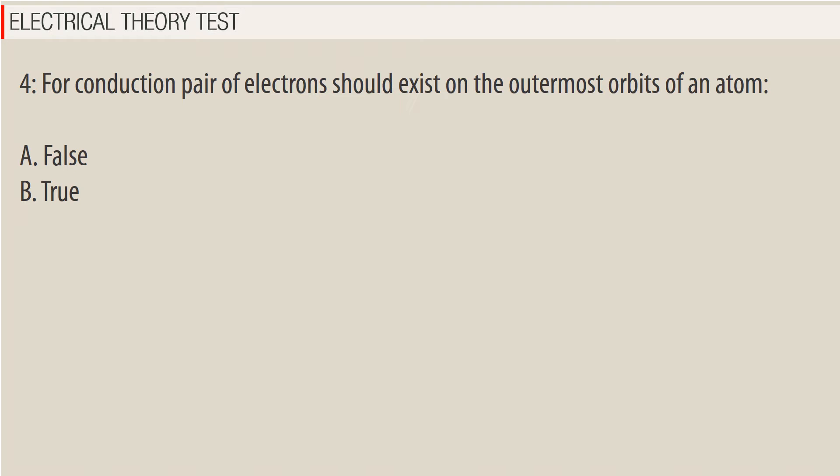Question 4: For conduction, a pair of electrons should exist on the outermost orbits of an atom. A. False. B. True.